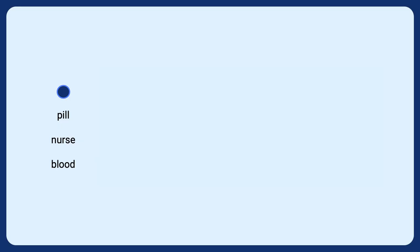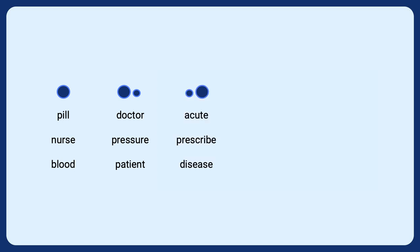Some languages don't have word stress — some languages emphasize each syllable equally, or place emphasis on one syllable only. In English it's different. Words with one syllable like 'pill', 'nurse', 'blood' have no real word stress. But words like 'doctor', 'pressure', 'patient' have emphasis on the first syllable. Words like 'acute', 'prescribe', 'disease' have stress on the second syllable.